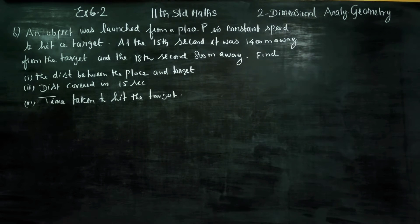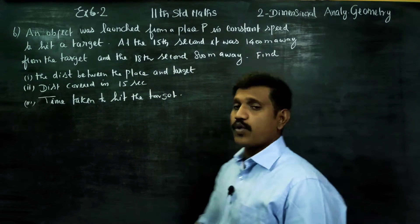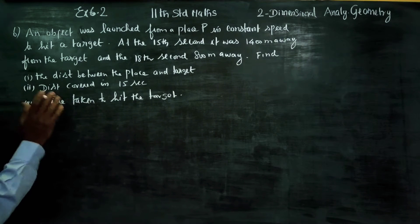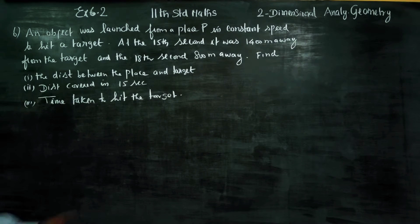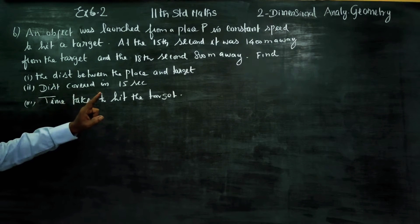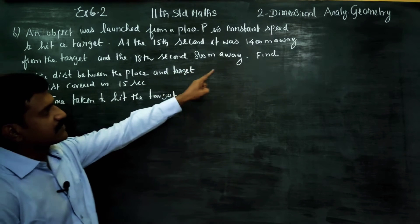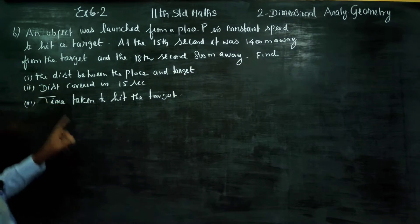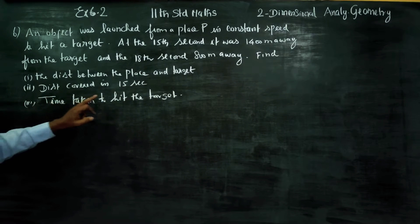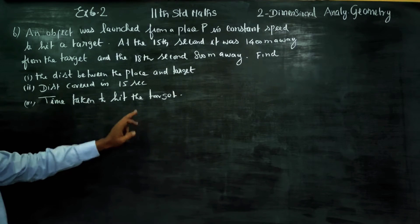Dear 11th standard students, an object was launched from a place P at a constant speed to hit a target. At the 15th second, it was 1400 meters away from the target, and at the 18th second, it was 800 meters away from the target. Find the distance between the place and target, distance covered, and time taken to hit the target.